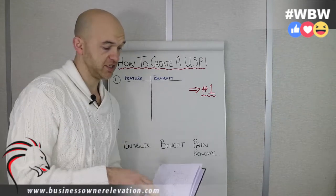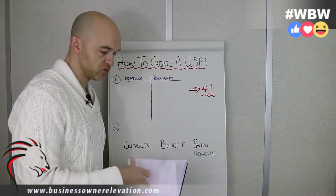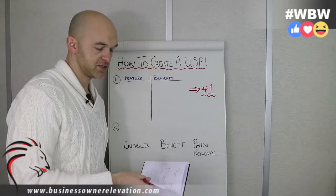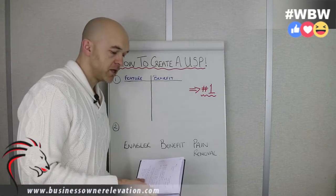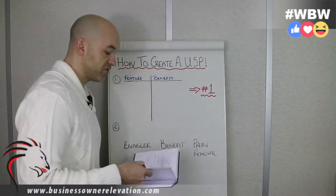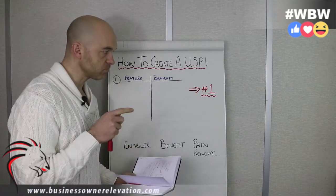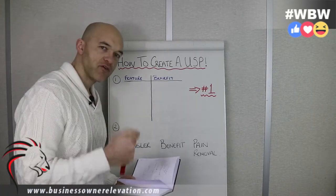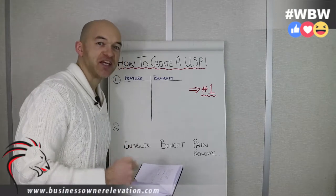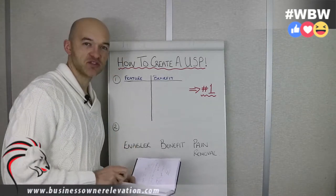I've got my trusty notes here. What I'm going to do is pull up a couple of examples, and one of them I want to get into is Domino's Pizza. Now, Domino's — one of their USPs that they had previously was: you can get fresh hot pizza to your door in 30 minutes or less, or the pizza was free.